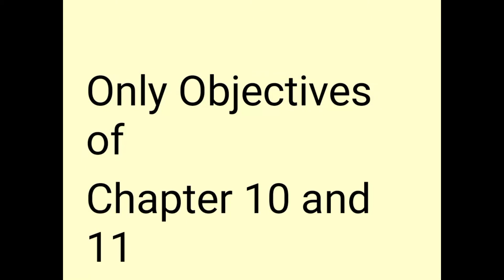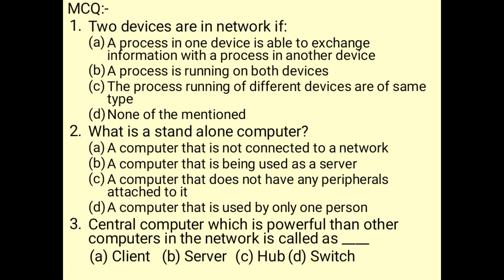Let's discuss objectives of chapters 10 and 11 on Networking. Two devices are in a network if a process in one device is able to access information with a process in another device. A stand-alone computer is a computer that is not connected to a network. A central computer which is more powerful than other computers in the network is called a server.